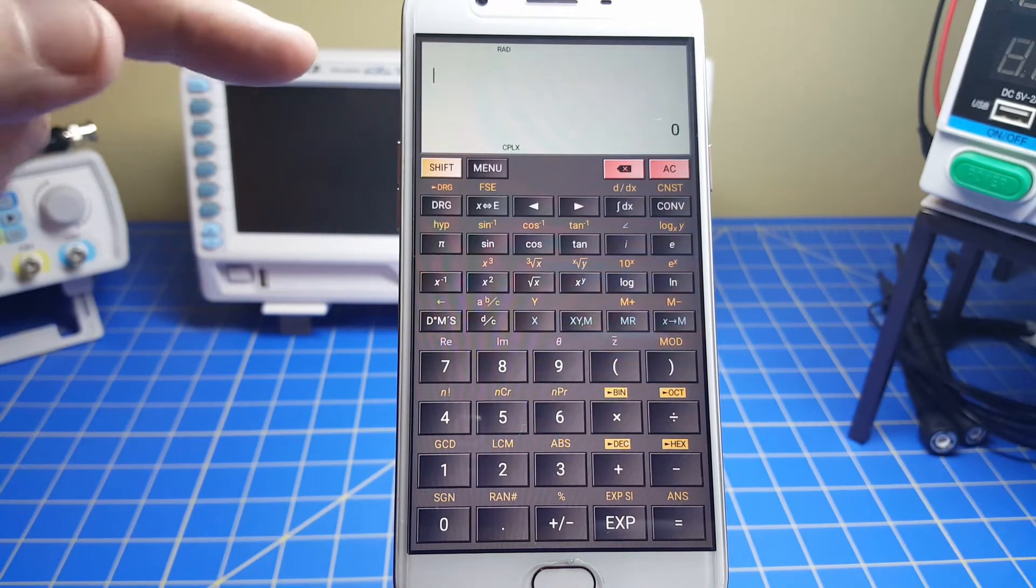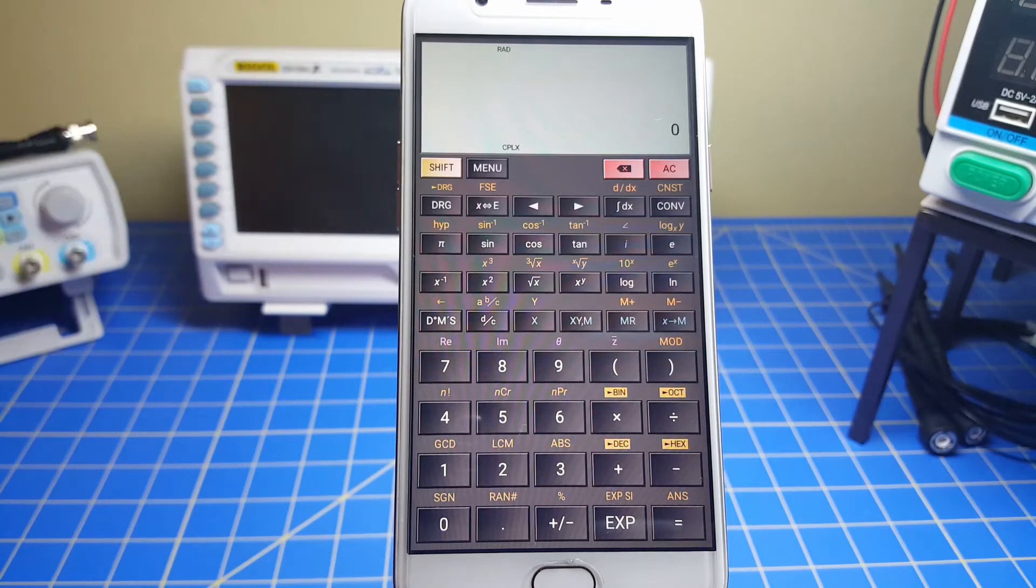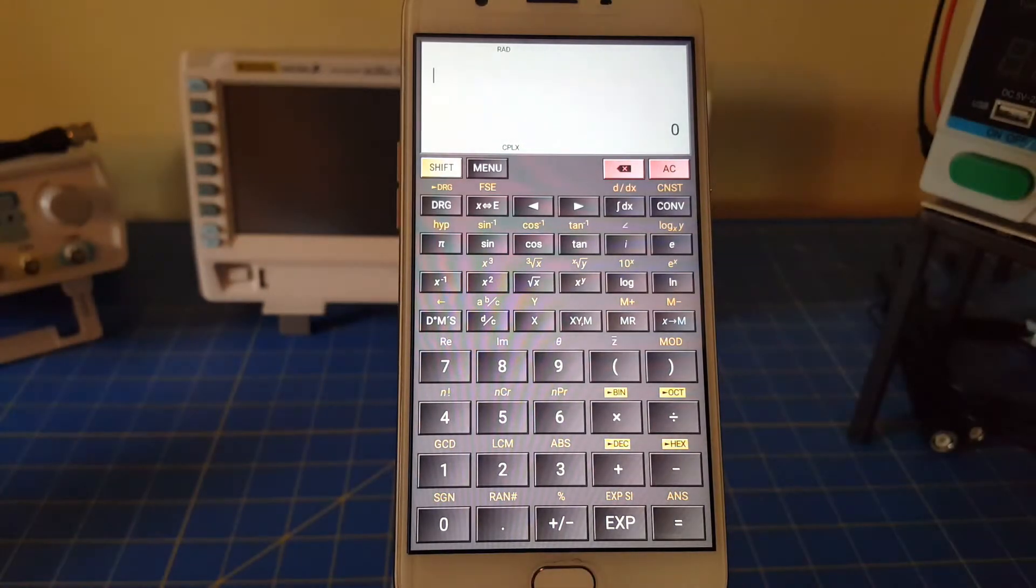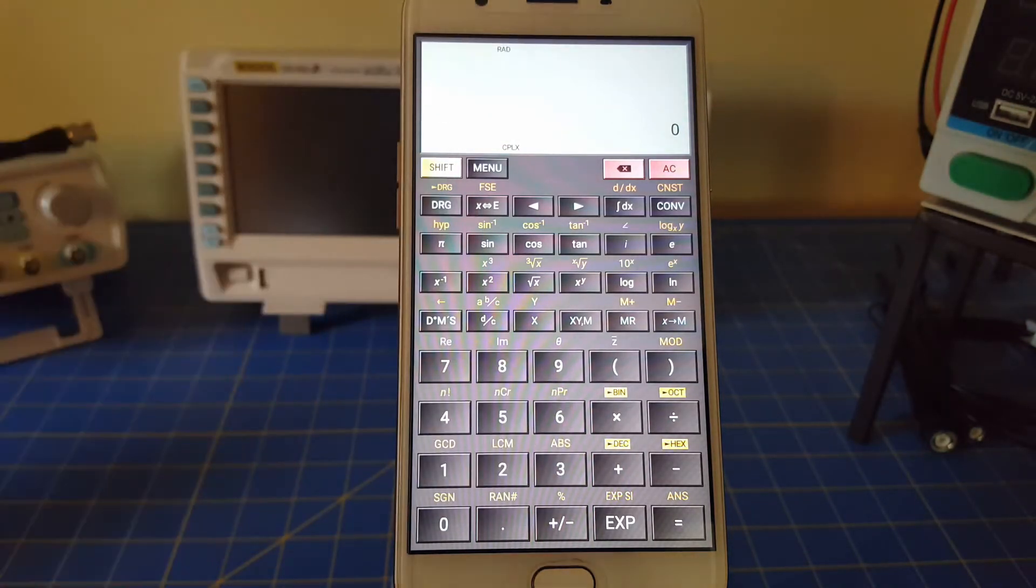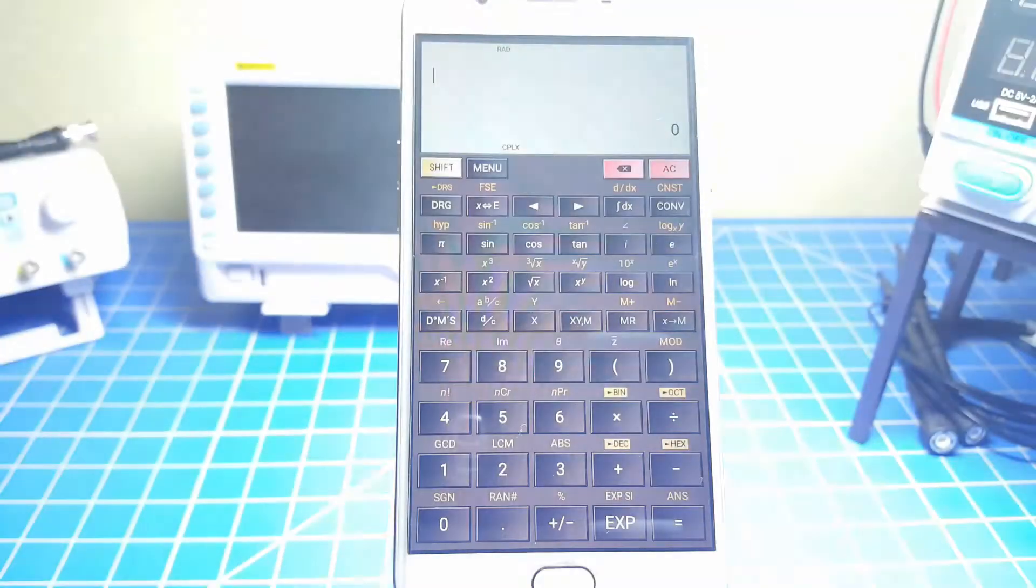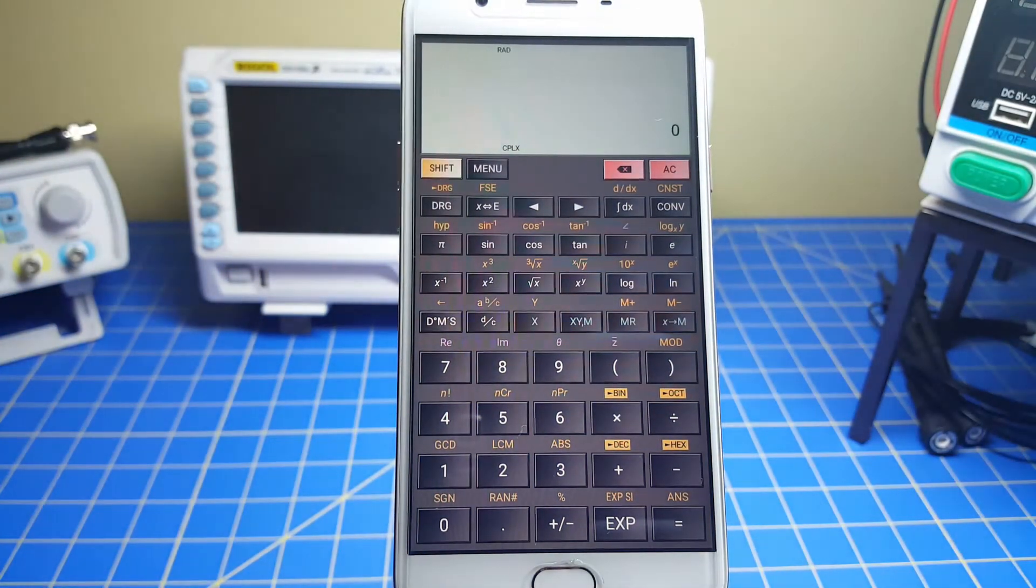Now, first thing I want you to notice, unlike the calculators you buy, if you turn off the light, look at how bright that is. Since it's a smartphone, it's as bright as you want. So even in no light, you can use the calculator. Wonderful.